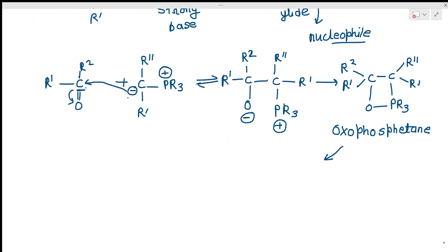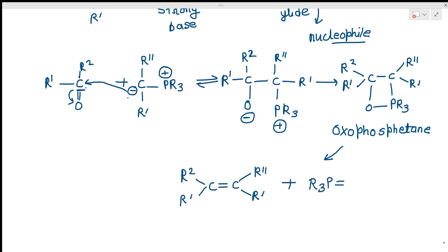Because it is highly unstable, the oxaphosphetane breaks down to give the alkene (R₂C=CR''R') and triphenylphosphine oxide (R₃P=O). The alkene formed is the desired product.